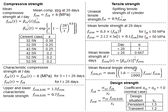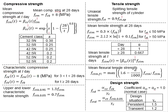There are two types of compressive strength. One is mean compressive strength, and another one is characteristic compressive strength. In the design of prestressed concrete,